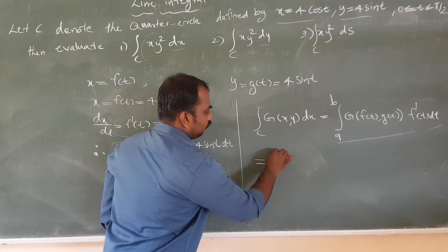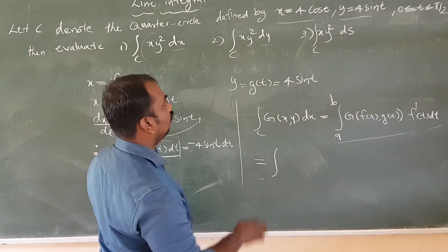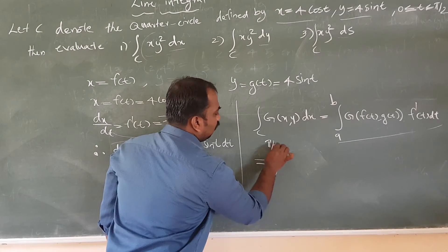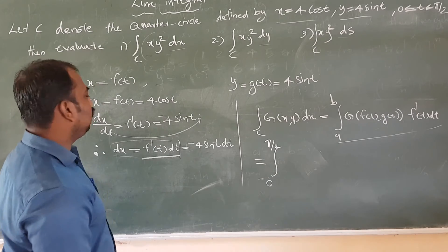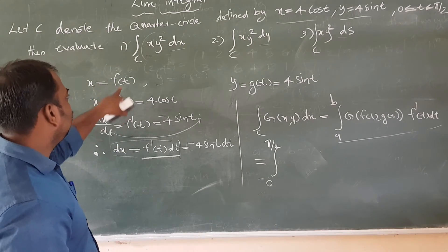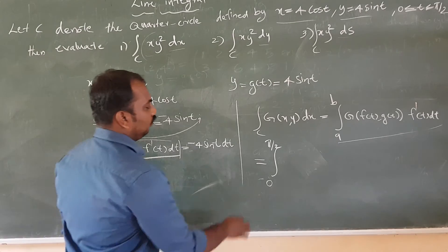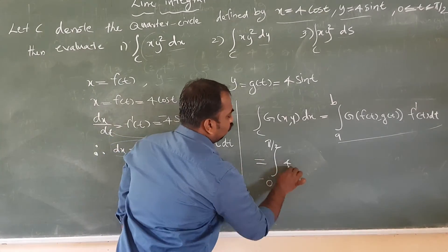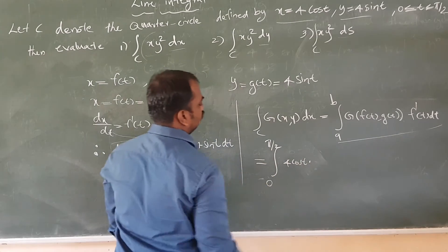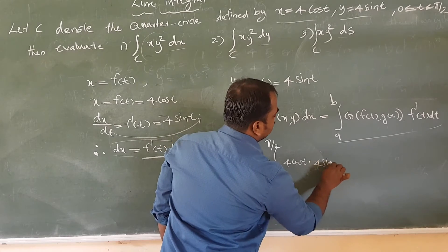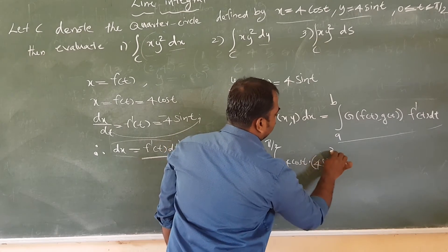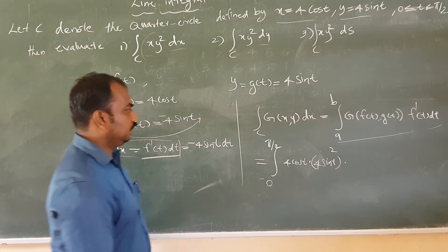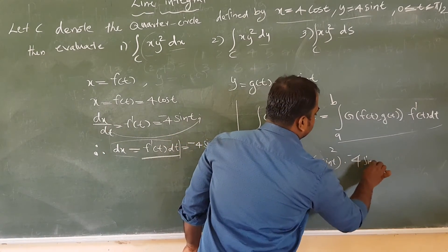This equals the integral from 0 to π/2. Substituting: g(x, y) becomes x times y squared, so we get 4 cos t into (4 sin t) squared, which is 4 squared (16), times F'(t) which is minus 4 sin t.